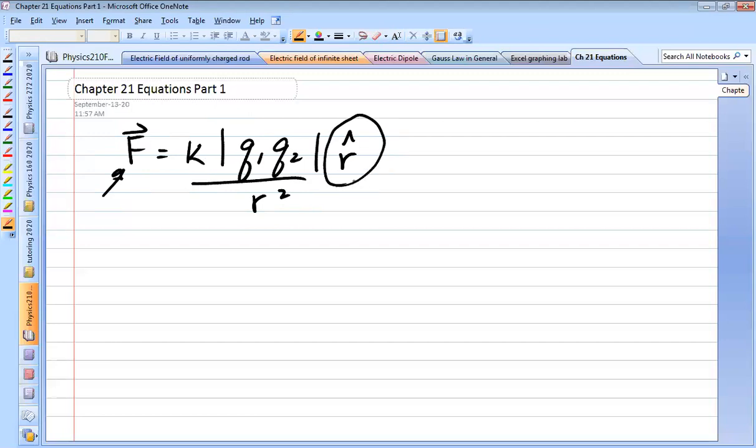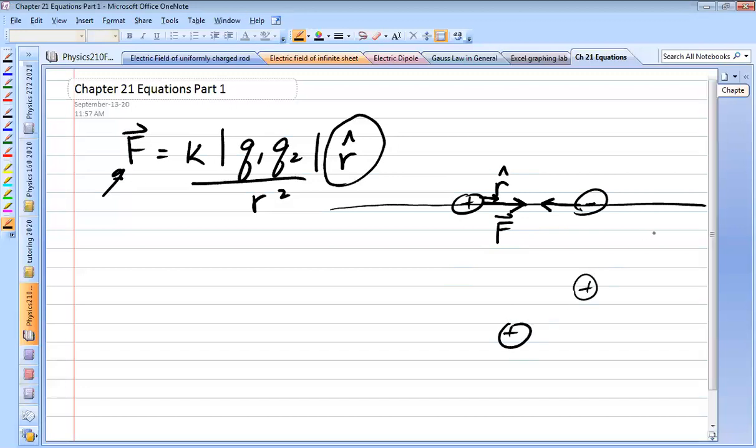This r hat gives the direction. So r hat by definition, if you have two charges, doesn't matter whether they're positive or negative or positive positive, r hat is the vector that runs along the line joining the center of the charges. Now whether it points to the left or the right depends on which charge you're looking at and what the signs of the charges are. So that's up to you to figure out which way it goes. So if it's a plus and a minus, obviously the force is attractive between these guys, then r hat would be the little unit vector in that direction. So basically r hat can point anywhere it needs to point.